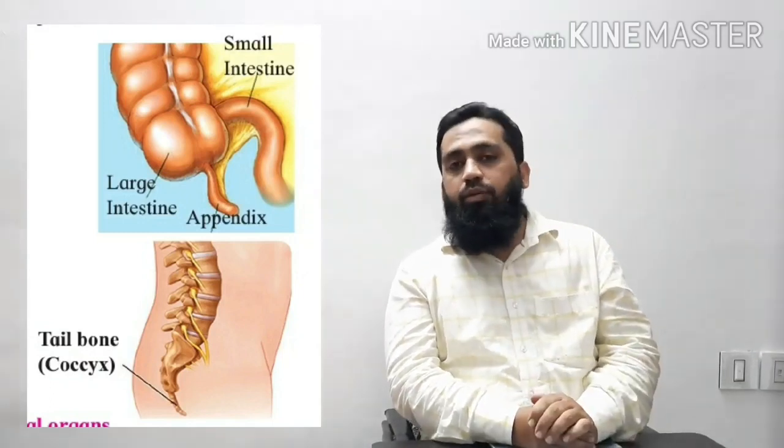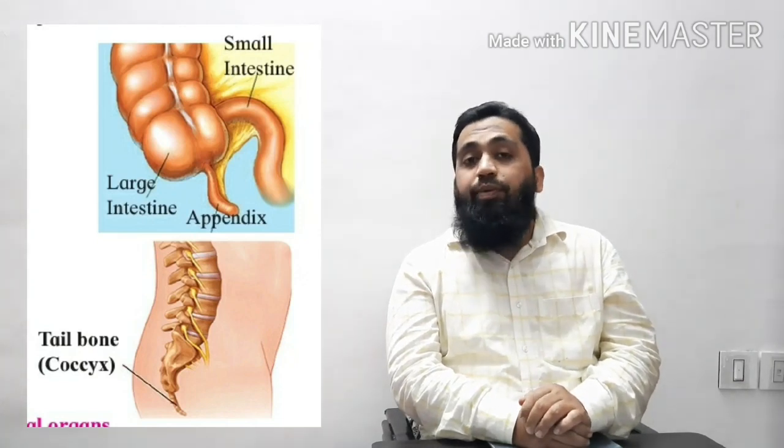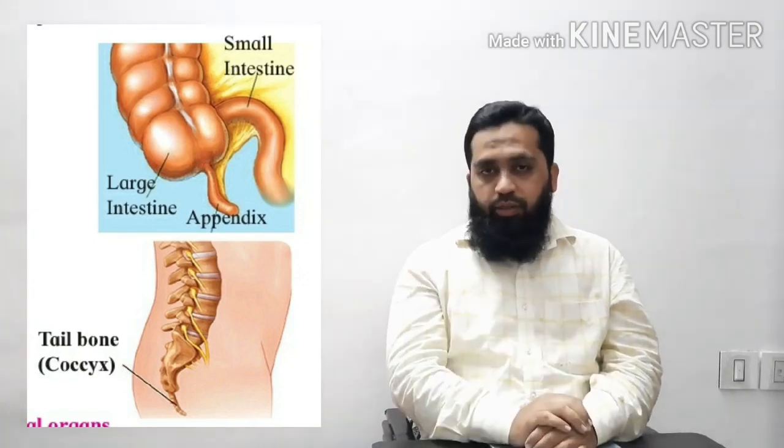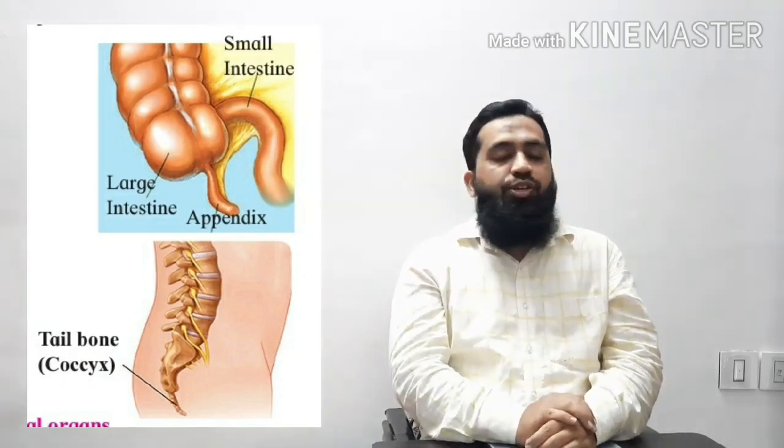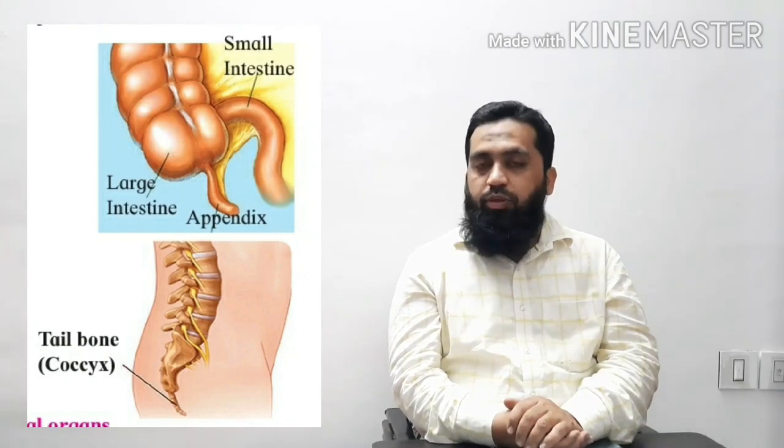Another example of a vestigial organ is the tailbone, called the coccyx. In human beings, just below the vertebral column, there exists a fused bone called the tailbone or coccyx, which has no function. But the same coccyx plays a great role in monkeys, helping them move from one place to another or hang from branches of trees. The presence of vestigial organs in human beings suggests that we have originated from a common ancestor shared with monkeys and ruminants.